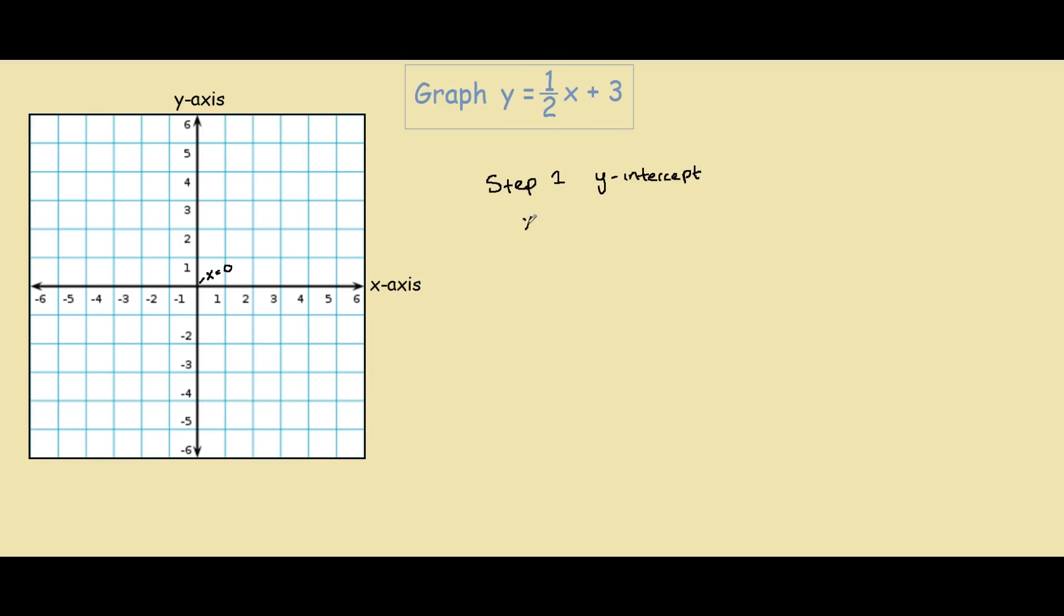At x equals zero, we have y equals one-half times zero plus three. That would be one-half times zero is zero, plus three is three. So our y-intercept is at zero, three. On the graph, it would be here: zero on the x and three on the y-axis.